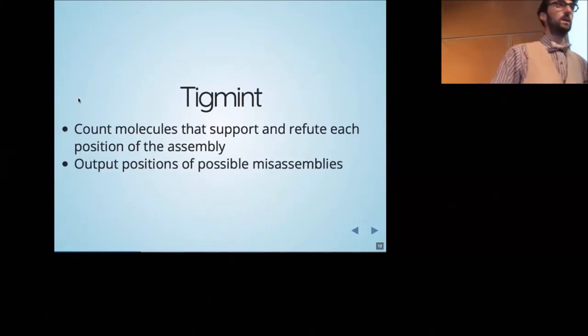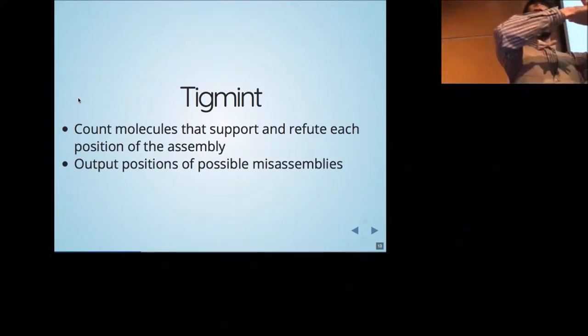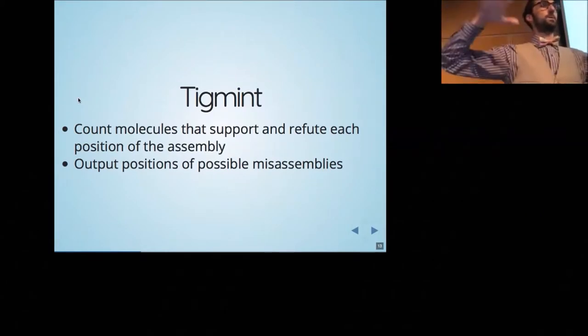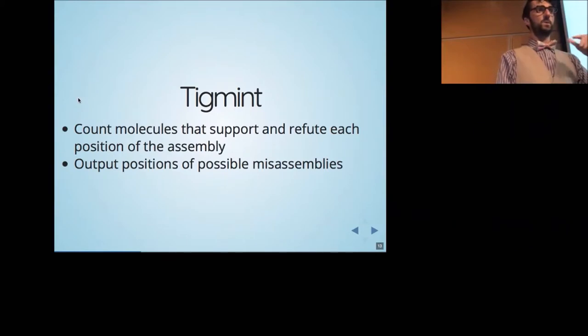The tool I've developed to tackle this problem is called Tigmint. The basic idea behind it is that you look at the depth of coverage across your assembly, but not of the reads—not the read depth of coverage—but of the physical molecule depth of coverage. So from the alignments of the reads and the barcodes, which indicate the molecule they came from, you infer the extents of the molecule. Now, instead of each bar representing a read, an aligned read, it represents an aligned molecule of tens or hundreds of kb.